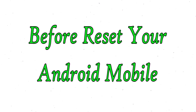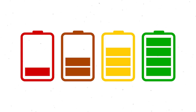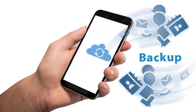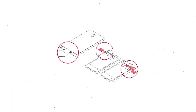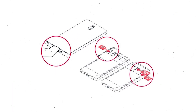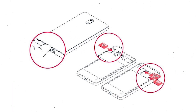Before resetting your mobile, charge your mobile if the battery is less than 50%. You need to make sure that the data on your device is backed up so you do not lose valuable photos or documents. Reset deletes all your mobile data, so you should back up all important data and remove SIMs and SD card.